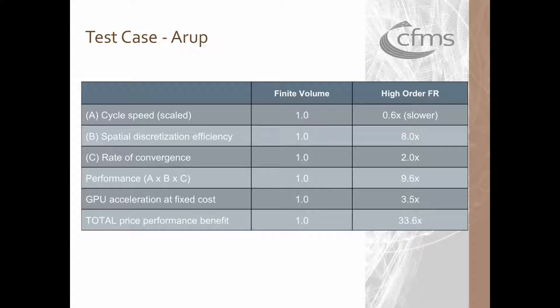From the following table it can be seen that the high order code is doing more work per cycle when compared with the standard finite volume code. Also there is a factor of 8 in the spatial efficiency since more detail can be captured using approximately the same number of degrees of freedom. It has been experienced that the high order simulations tend to converge to a steady state solution by a factor of 2.